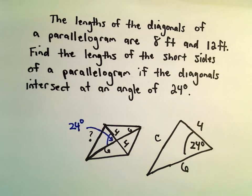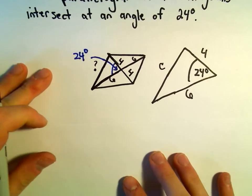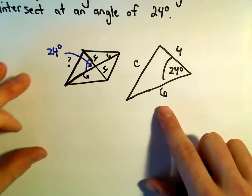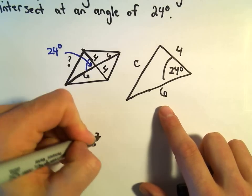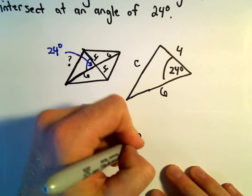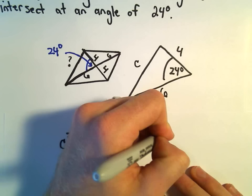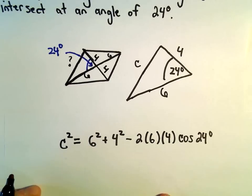So here we'll just use the law of cosines. We would get C squared equals 6 squared plus 4 squared minus 2 times 6 times 4 times cosine of 24 degrees.